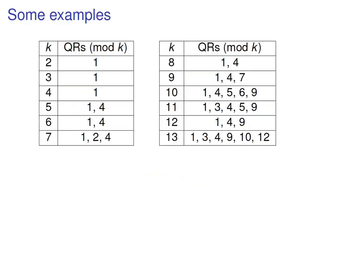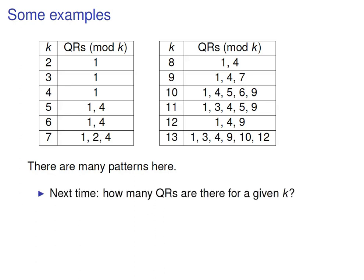Here I've listed the squares mod k for each k between 2 and 13. For each k, I've listed them in order of size rather than in the order they appear in the sequence. These numbers are rich with patterns, which we'll be exploring in subsequent lessons. One pattern present is that there's a formula for the number of squares mod k in terms of k — that's what we'll be discussing next time.